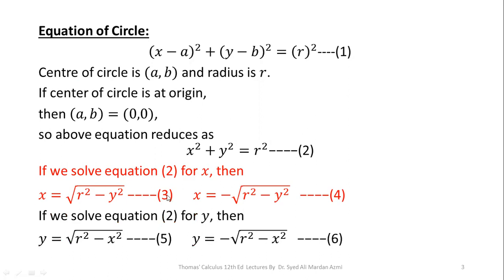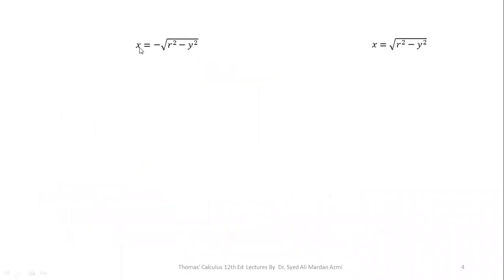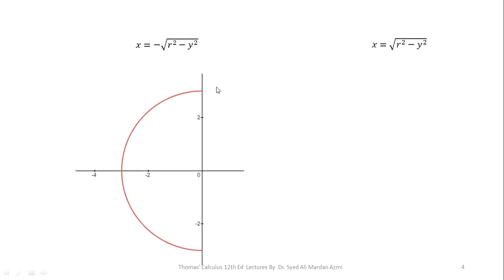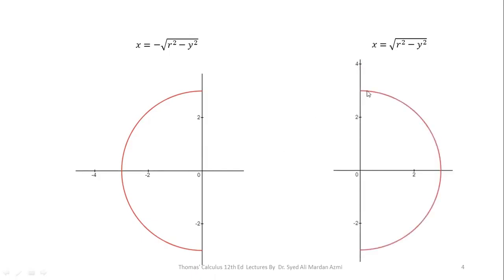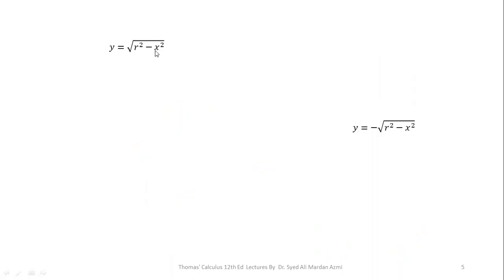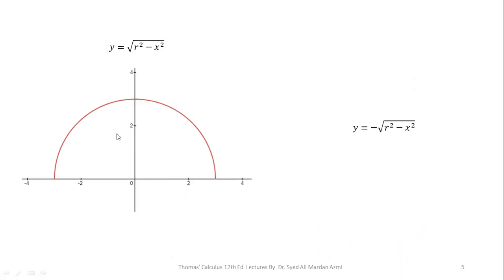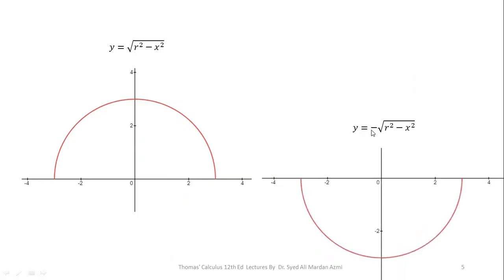In the next slide we will see which part of the circle is represented by each equation. x = −√(R² − y²) gives a semicircle in the second and third quadrant, or the left half-plane where x is negative. x = √(R² − y²) gives a semicircle in the right half-plane, in the first and fourth quadrant. y = √(R² − x²) gives a semicircle in the upper half-plane, in the first and second quadrant. y = −√(R² − x²) gives a semicircle in the lower half-plane, in the third and fourth quadrant.